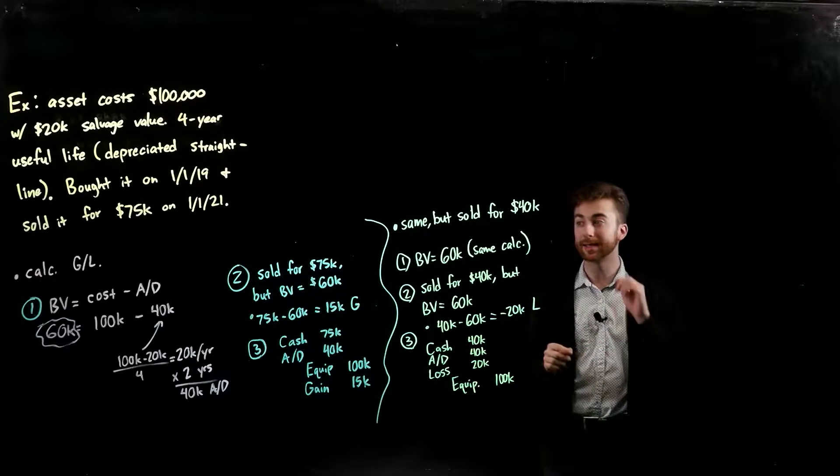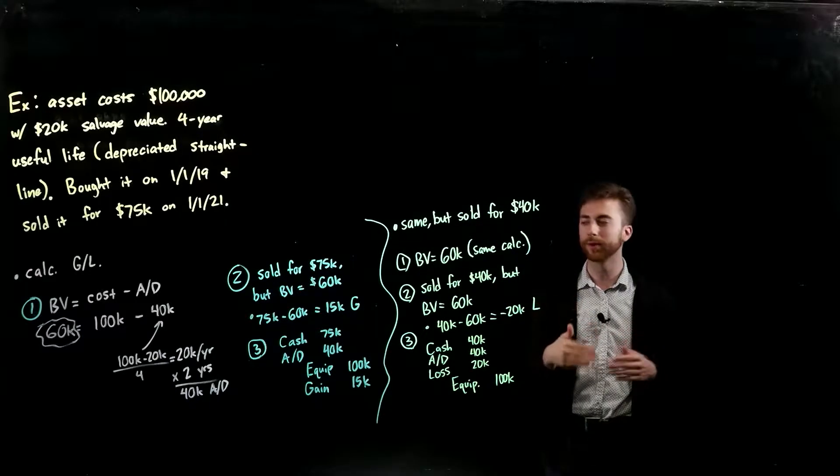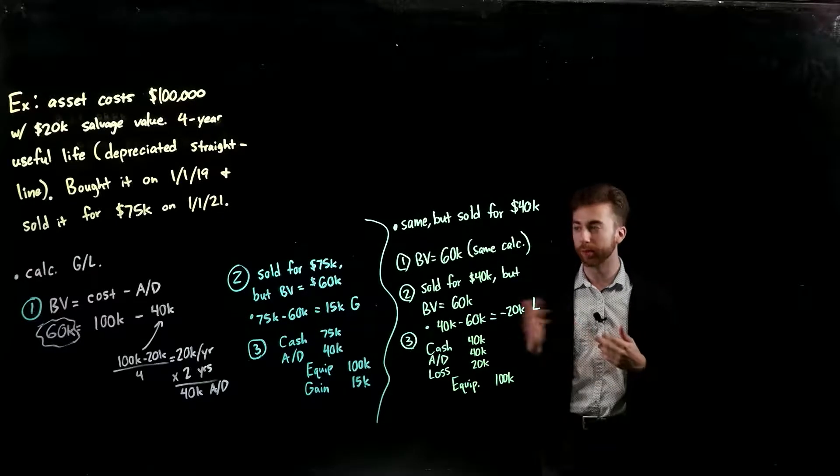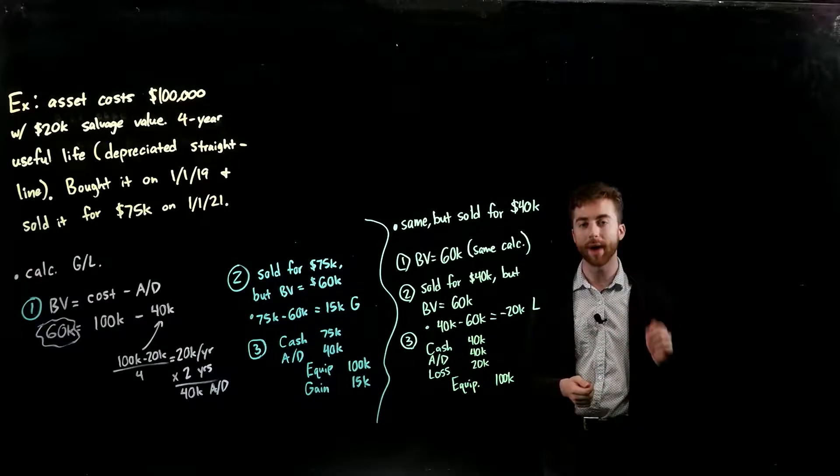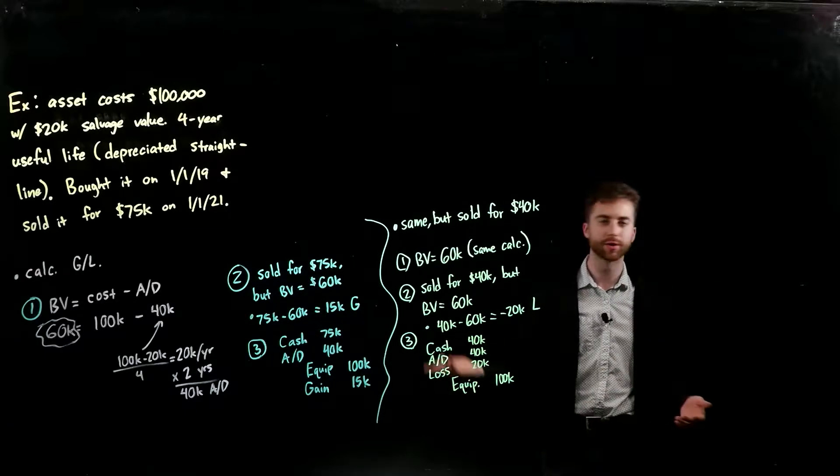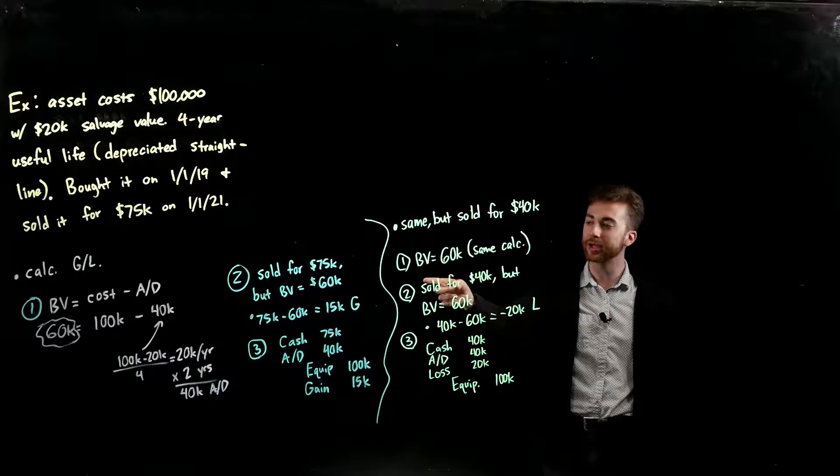To start off with, we need to know what our book value is because that's what we're going to compare against our $75,000 that it sold for to decide whether or not it's a gain or a loss. The book value is again the cost minus your accumulated depreciation. The cost of the asset was just the $100,000 - it's what we had to pay to get that asset. So that's not too bad.